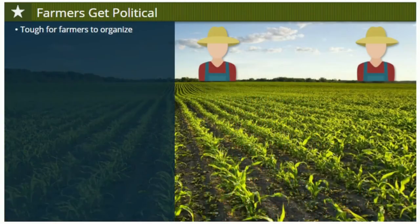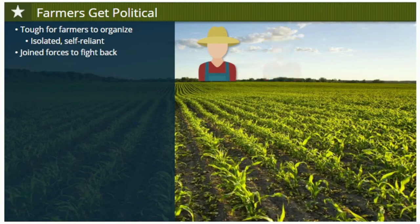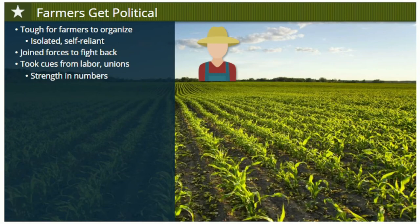It was tough for farmers to organize politically. Not only did many live in isolated places, but farmers in general prided themselves on their rugged individualism and self-reliance. Eventually, though, farmers did begin to join forces, believing that it was the only way to challenge a government they thought was hostile to their livelihood. They took some cues from the labor movement. In big cities where factory work dominated, workers had successfully formed unions, realizing their strength lay in numbers and organizing together to negotiate for better wages and working conditions.